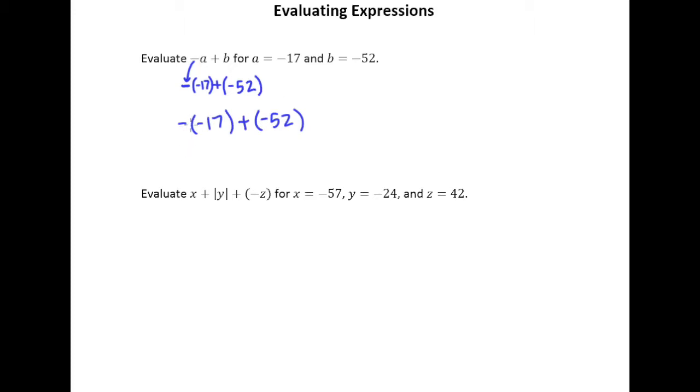Now remember we talked about how to deal with something like this. Remember we could say that this symbol kind of means the opposite. So what I'm really doing here is I'm taking the opposite of negative 17. Well what's the opposite of negative 17? 17. And I'm adding negative 52. And then of course we have numbers with different signs, so I'm going to subtract the absolute values, get 35. But of course the answer is negative 35 because the negative is on the bigger absolute value.